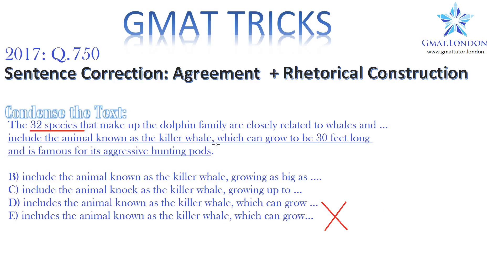After the comma, the original answer A has 'which', whereas B and C have 'growing as big as' or 'growing up to'. Which one makes it very clear we're talking about the killer whale growing up to 30 feet long? It would be A. Whenever you see a comma and then 'which', that's always referring to the noun just before the comma — so it's exactly talking about the killer whale. If you look at B and C, 'growing as big as' or 'growing up to' — we assume it's the killer whale, but it might be the dolphin family or the 32 species. It's not quite clear what we're referring to. Remember, the GMAT correct answer will always be incredibly clear about what it's referring to at all times.